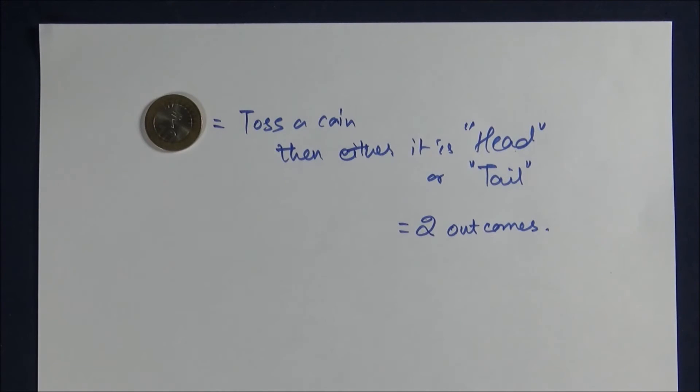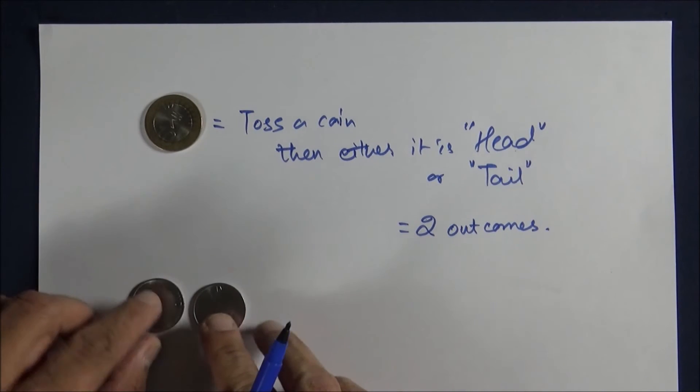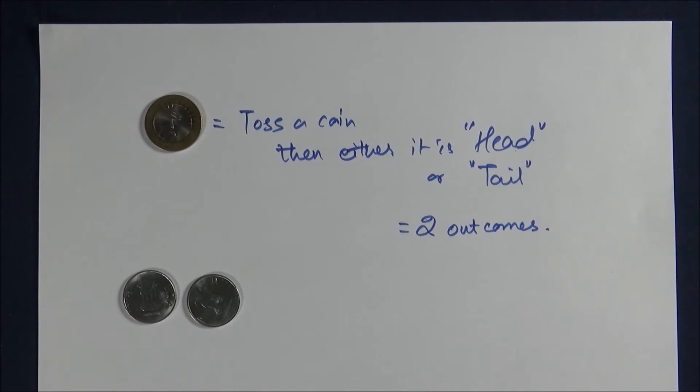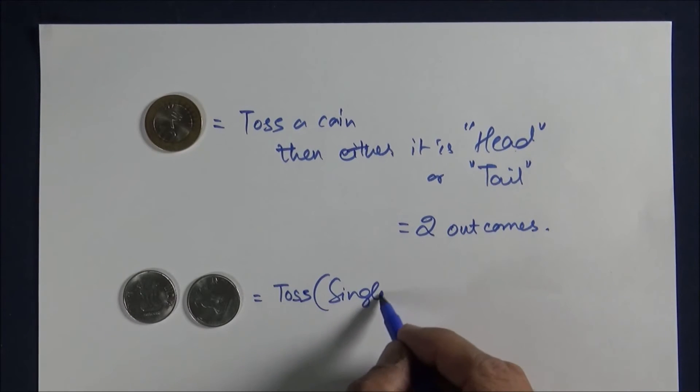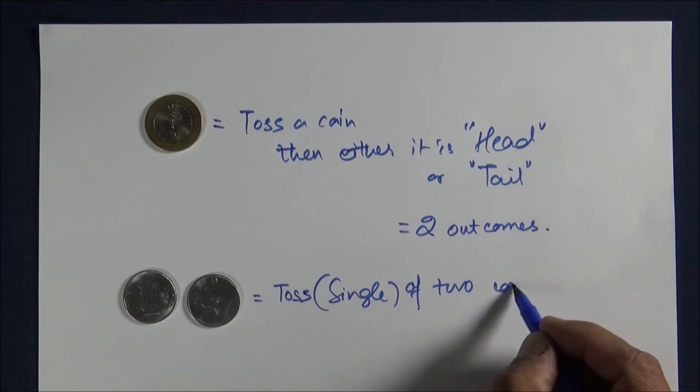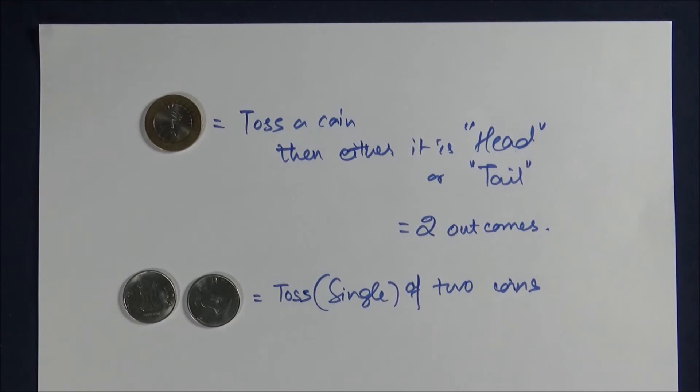Similarly, if we have two coins and we toss them once, then there will be four outcomes.